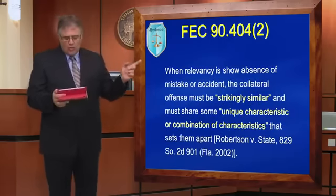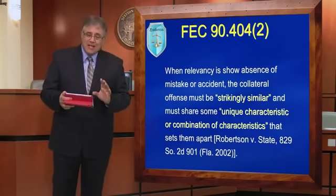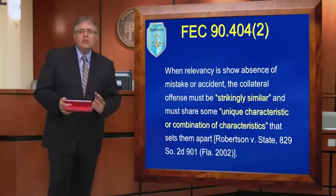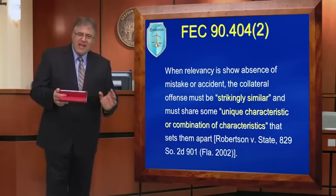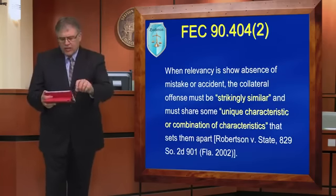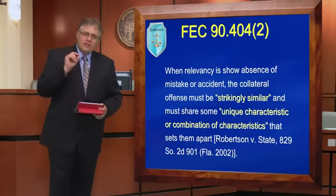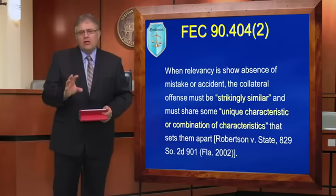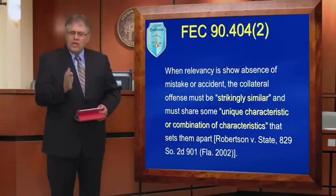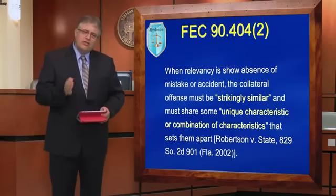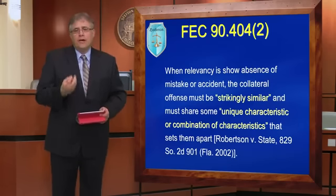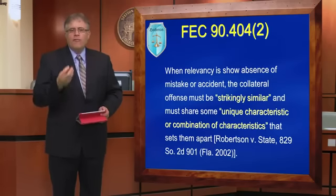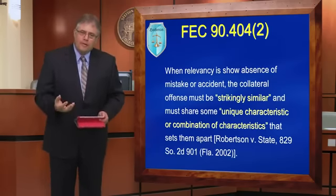When relevancy is shown for the absence of mistake or accident, the collateral offense must be strikingly similar — language from Florida case law — and there must be some unique characteristic or combination of characteristics. The take-home point is that in Florida, when dealing with non-character theories of relevancy for character evidence, we want them to be sufficiently similar that we're comfortable with the jury knowing about it, because the prejudicial effect is phenomenal, and we want that prejudicial effect to be appropriate and not unfair.